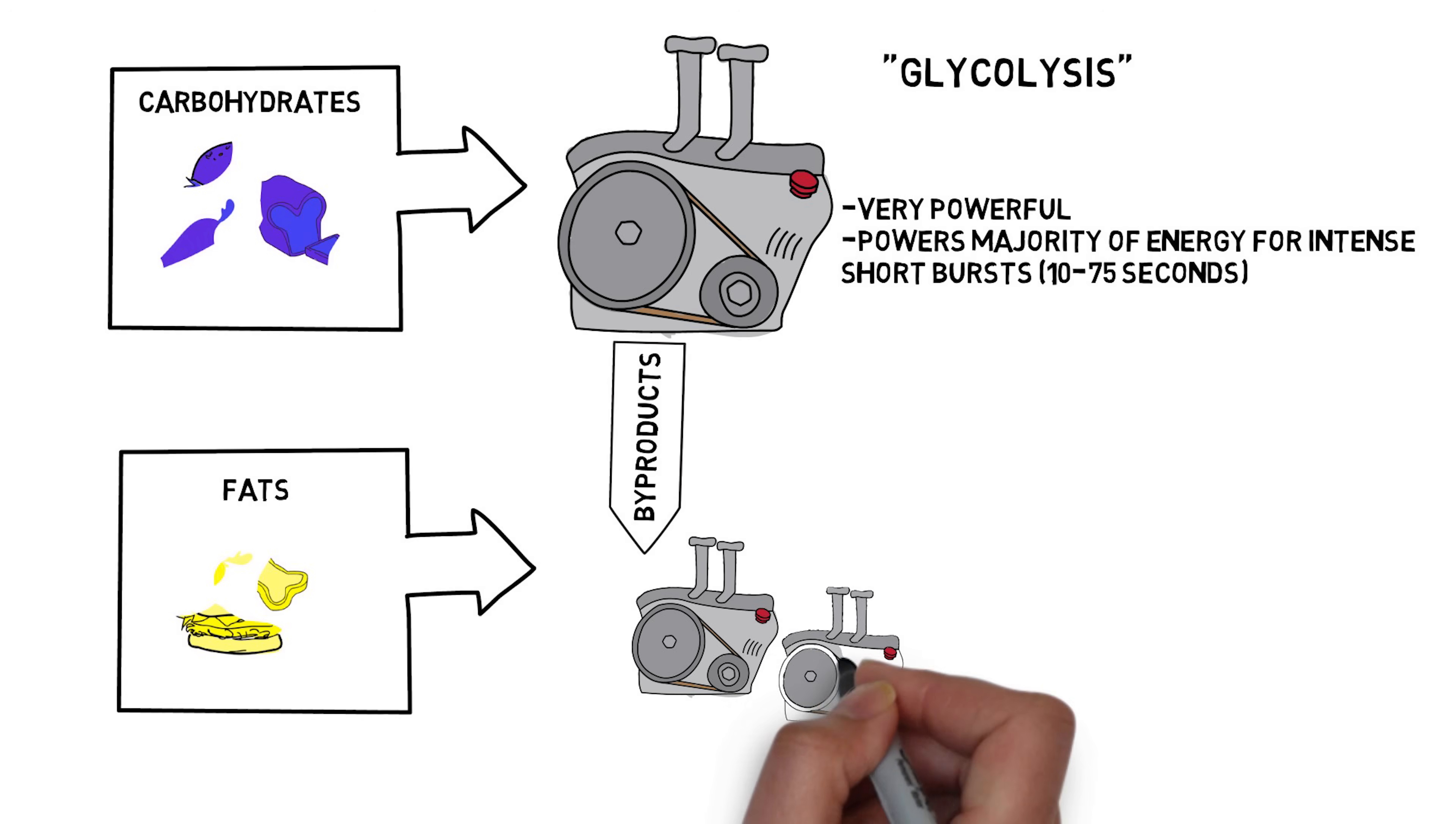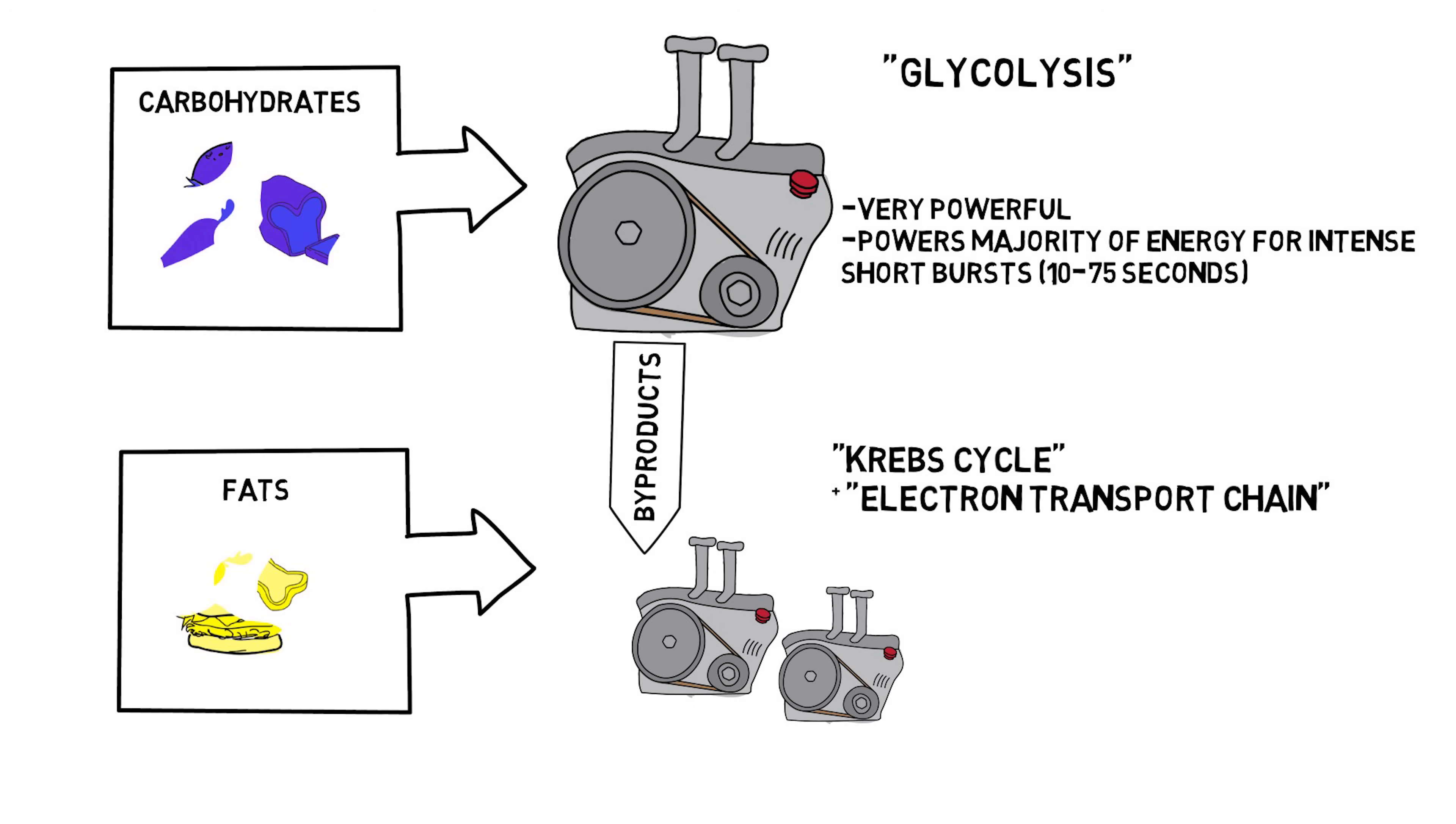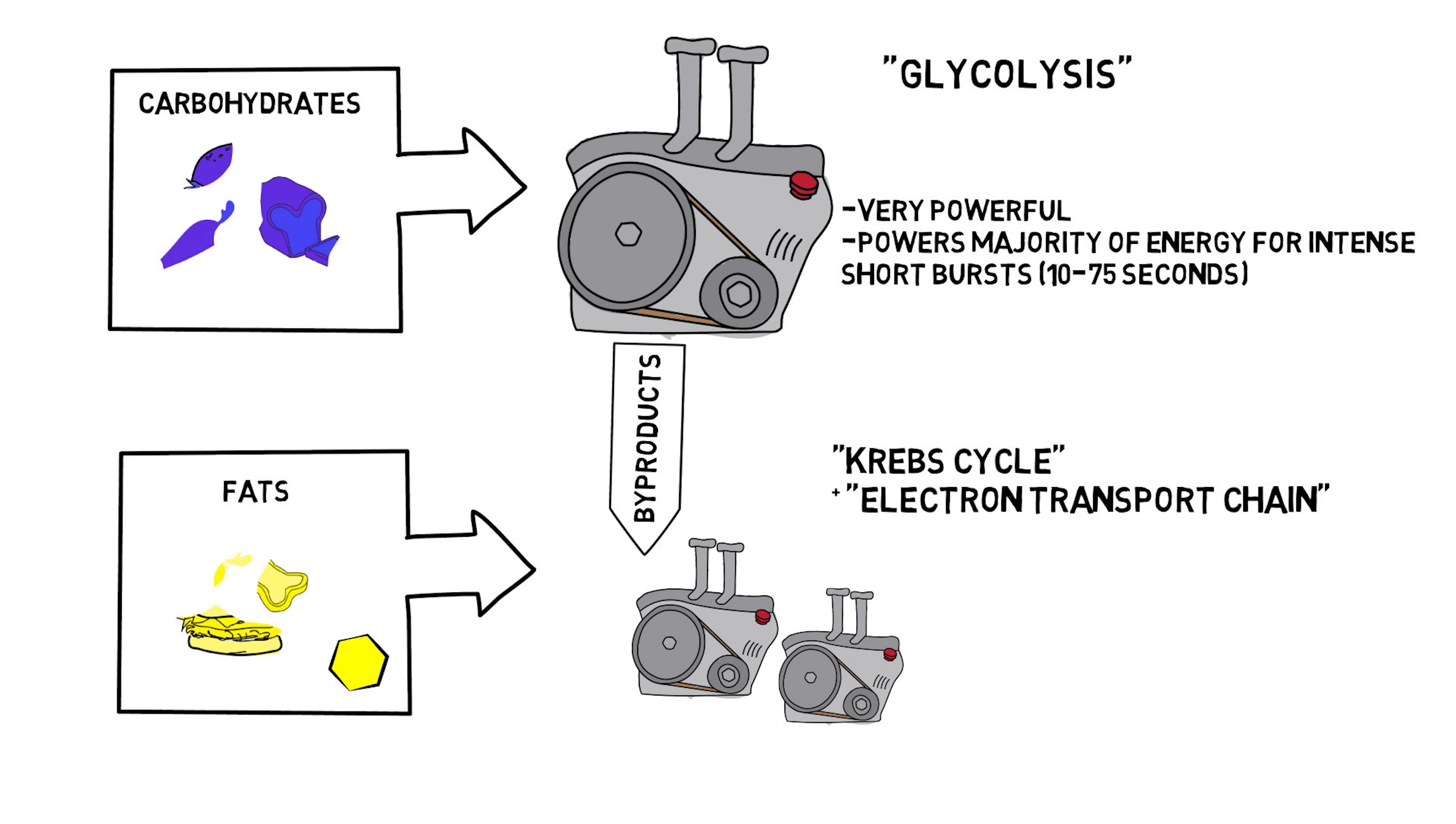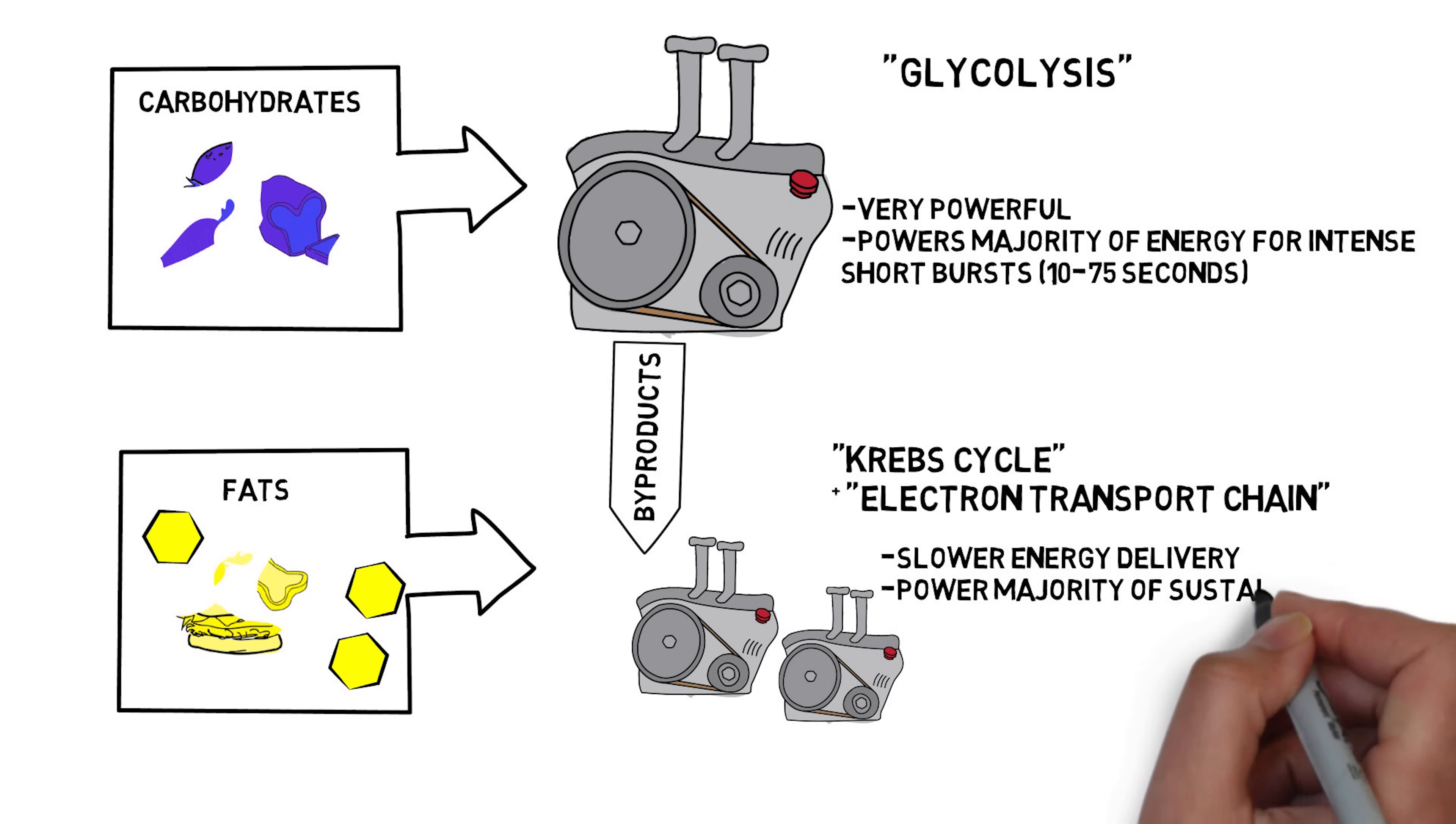Your cells have a favorite fuel, a fuel which delivers the most energy, fastest, and with the least effort. This system is called glycolysis. It burns sugars, aka carbohydrates, specifically in the form of glucose. This system is capable of delivering huge amounts of power on demand. And its byproducts can be used by the other two generation systems.